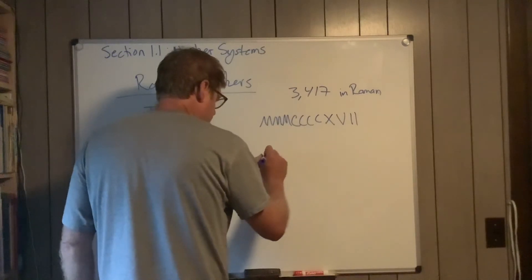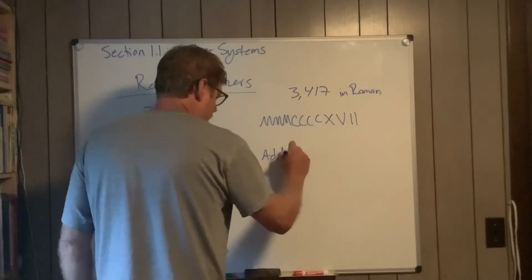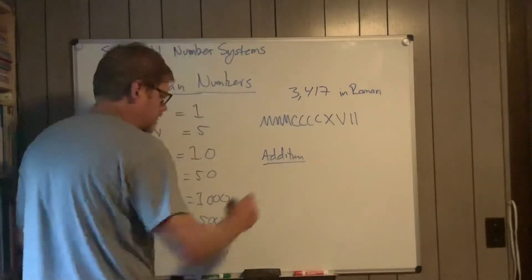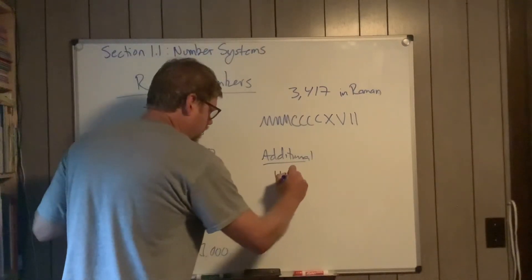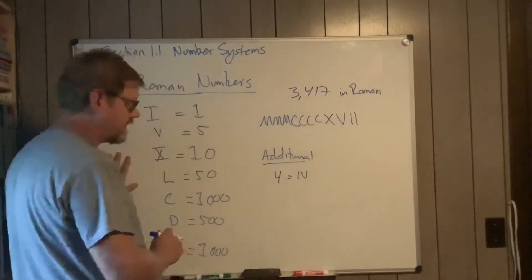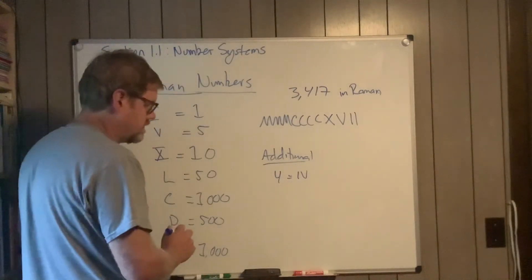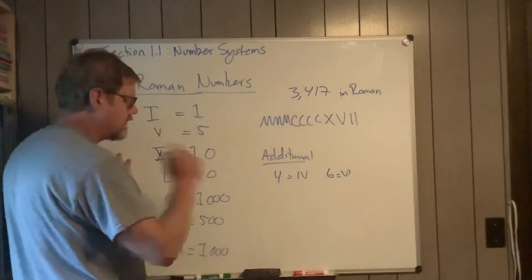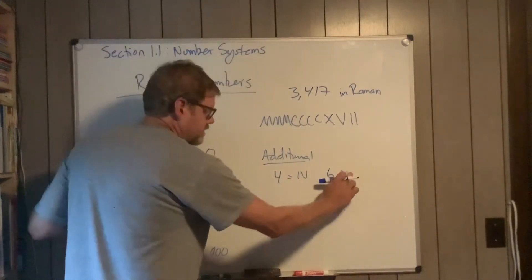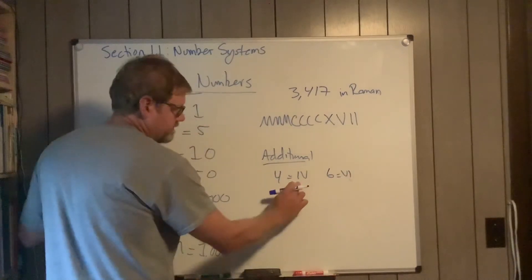Four, I can write as IV. And then six is VI. So the order of this is different. If the I comes before the V, it's 4. If it comes after, it's 6.